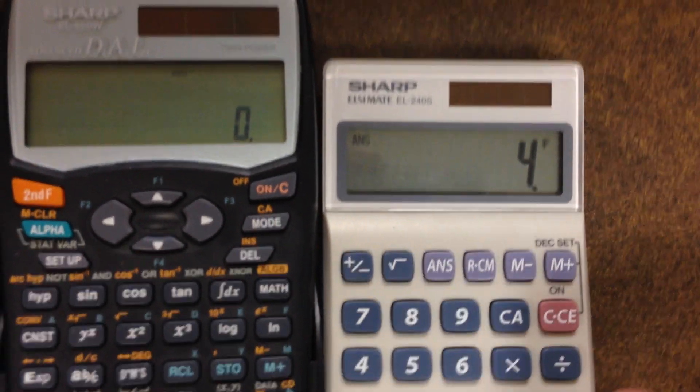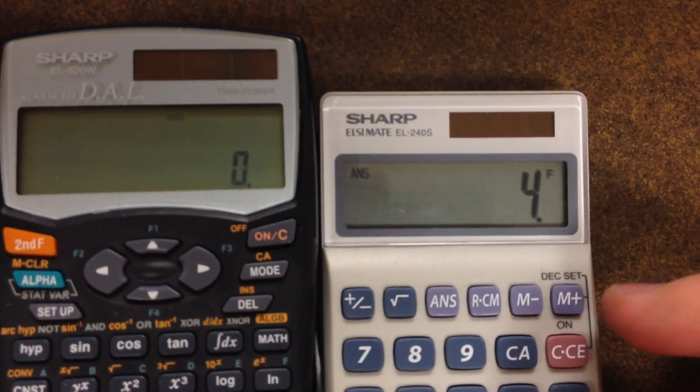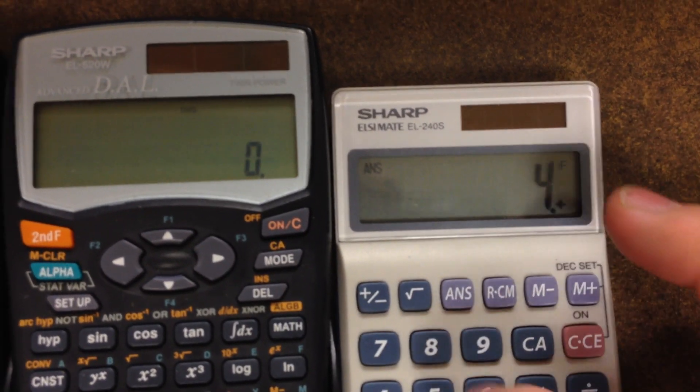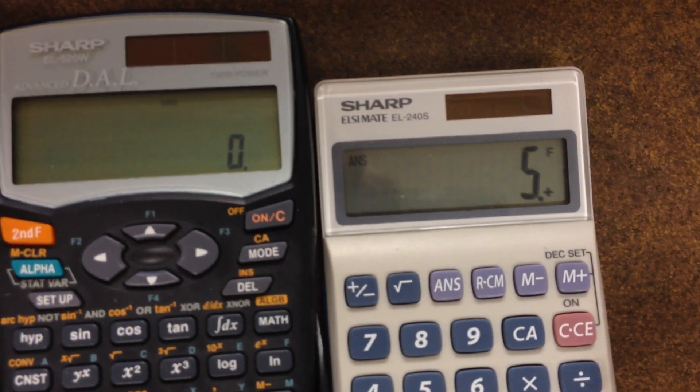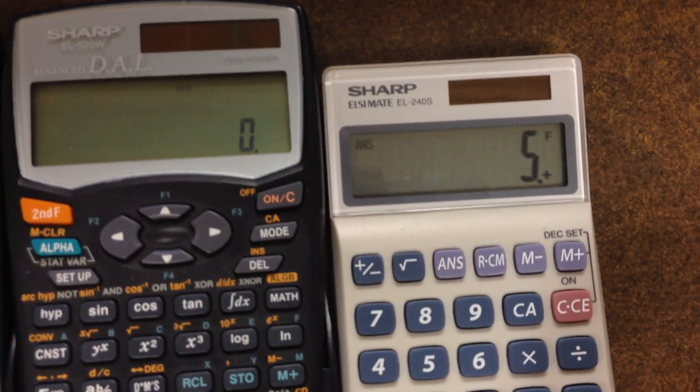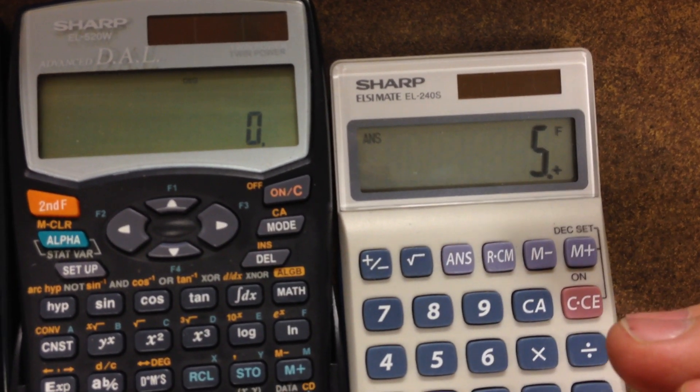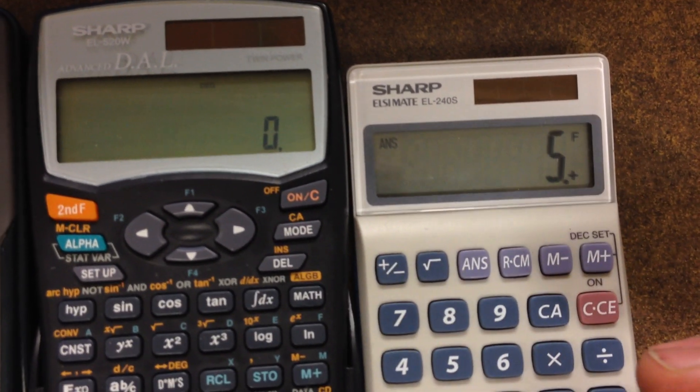Instead of a long list of numbers, I'm just going to go with 4 plus 5. Now, at this point, you realize you made a mistake. Instead of 5, you want to enter 6. You want to make it 4 plus 6.